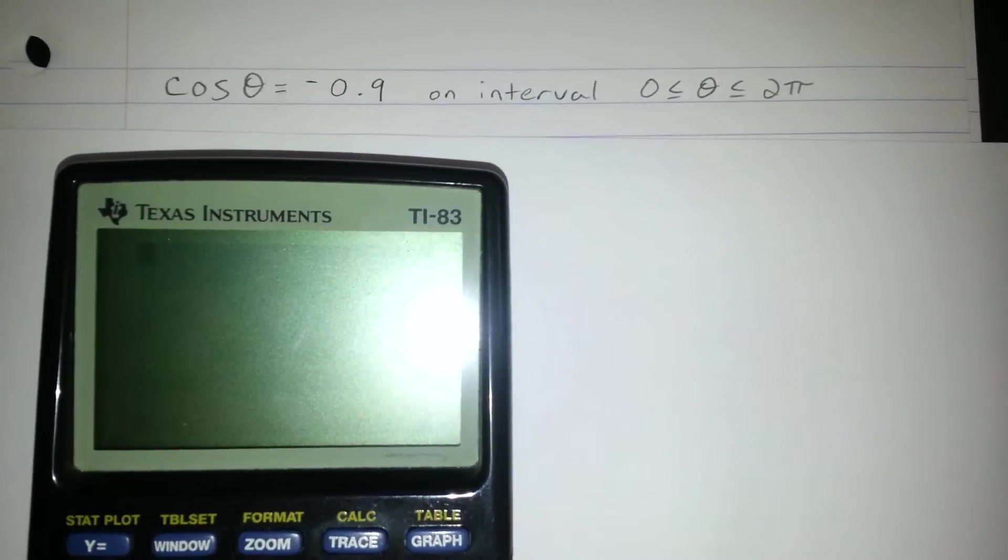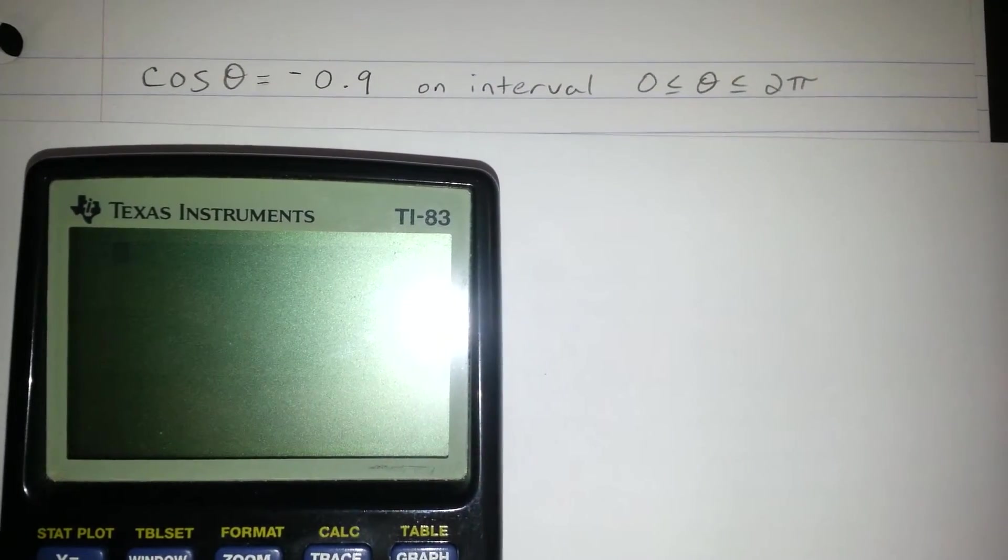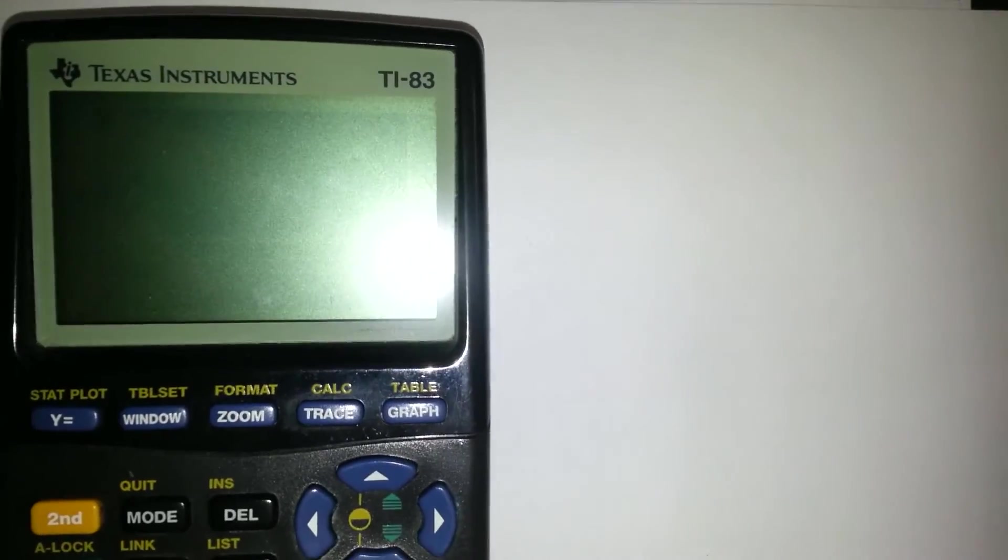To solve cosine equals negative 0.9 on a calculator, we first need to set the mode to radians.